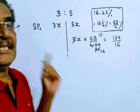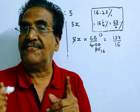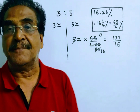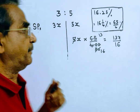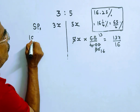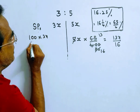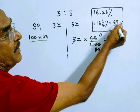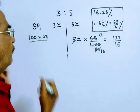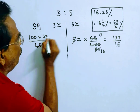Now let us see the profit earned by the first salesman. The first salesman calculated his profit on cost price. So firstly let us find the cost price. This is the selling price. Cost price is equal to 100 × selling price divided by (100 + profit), that is 100 + 65/4 = 465/4.